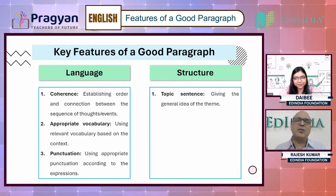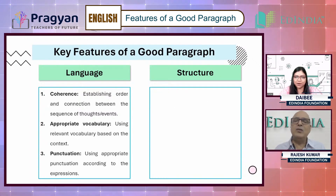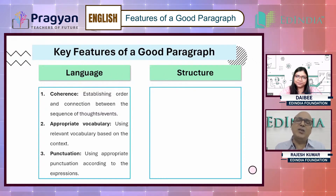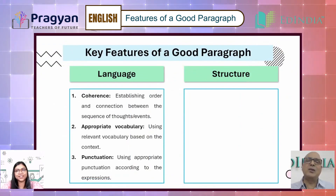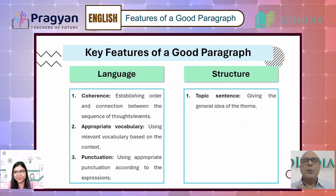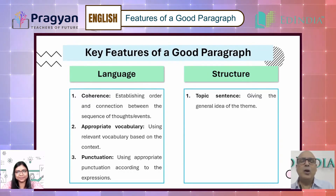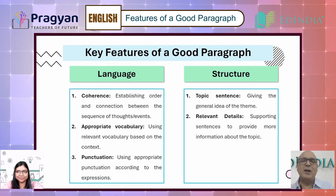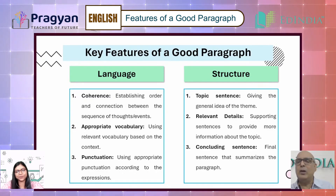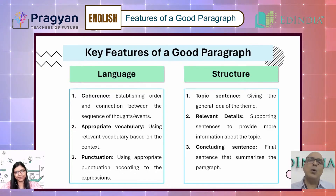Language has three parts: coherence, vocabulary, and punctuation. The second part is organization, which has two parts: order and connection. Then for structure, there should be a topic sentence with a general idea, then the details of the paragraph, and then a concluding sentence that summarizes the whole paragraph.